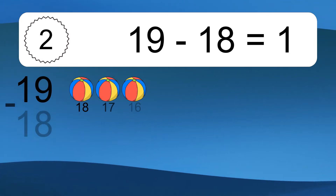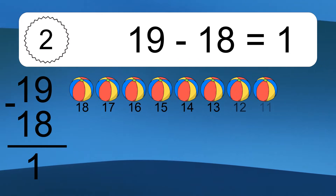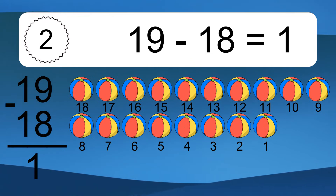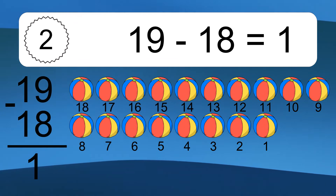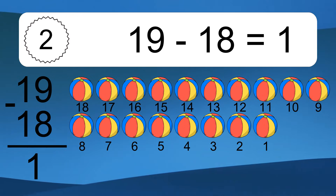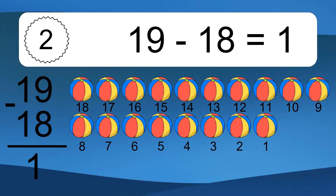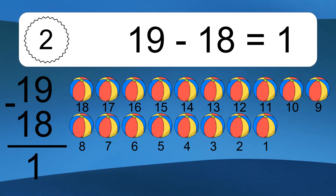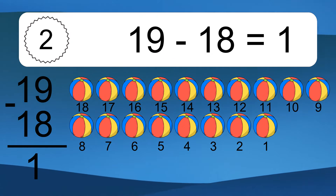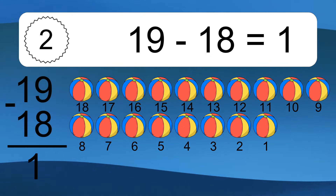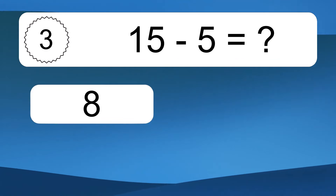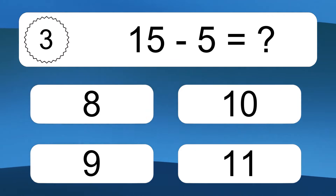Nineteen minus eighteen equals what? 19 minus 18 equals one. Let's count it: 18, 17, 16, 15, 14, 13, 12, 11, 10, 9, 8, 7, 6, 5, 4, 3, 2, 1.